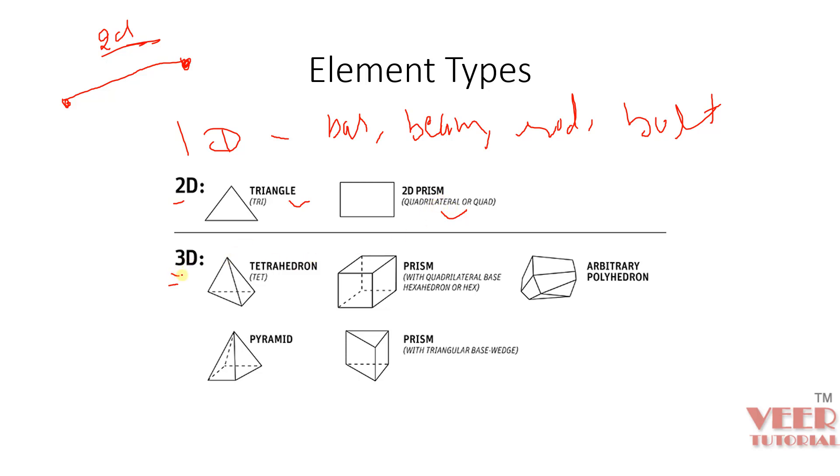Now in case of 3D, we have tetrahedron element. In case of tria, we have 3 nodes, so this is called 3-noded triangular element. In case of quadrilateral, we have 4 nodes at the center. Now in case of 3D element, the first type of element is called the tetra element or tetrahedron. The tetrahedron element is made of 4 nodes: 1st node, 2nd node, 3rd node, and 4th node.